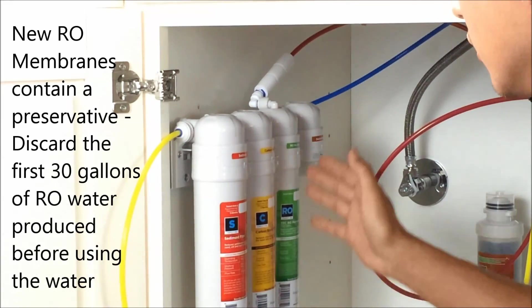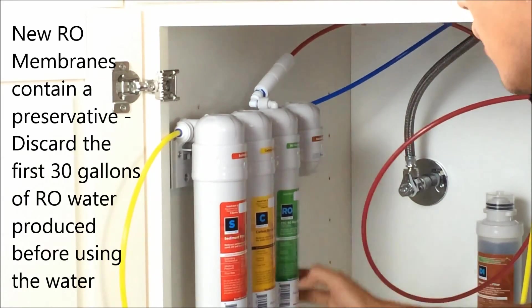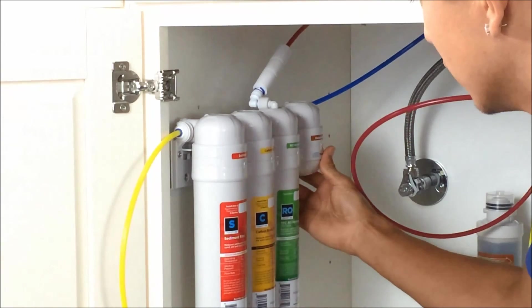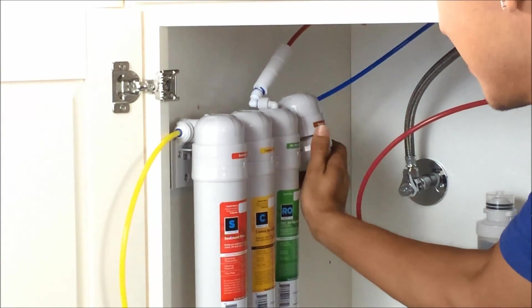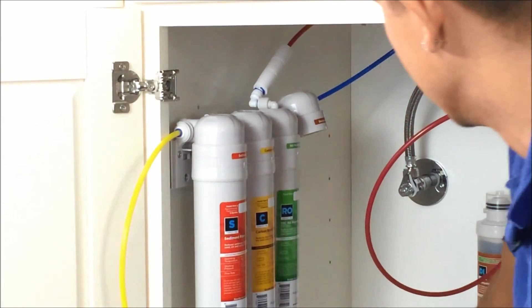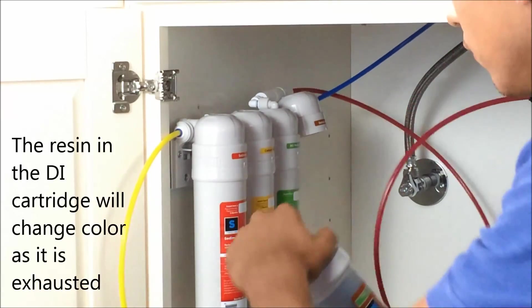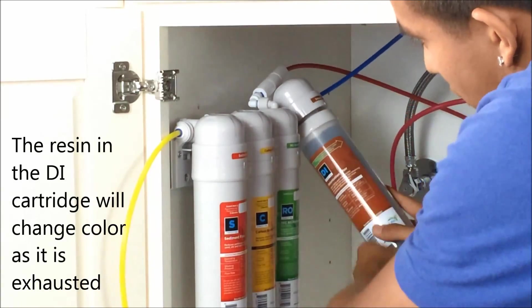You'll want to discard the first 30 gallons of filtered water. Once you've done that, you can go ahead and remove this flush cap and place your DI cartridge. If you don't flush the membrane, your DI will not last very long.